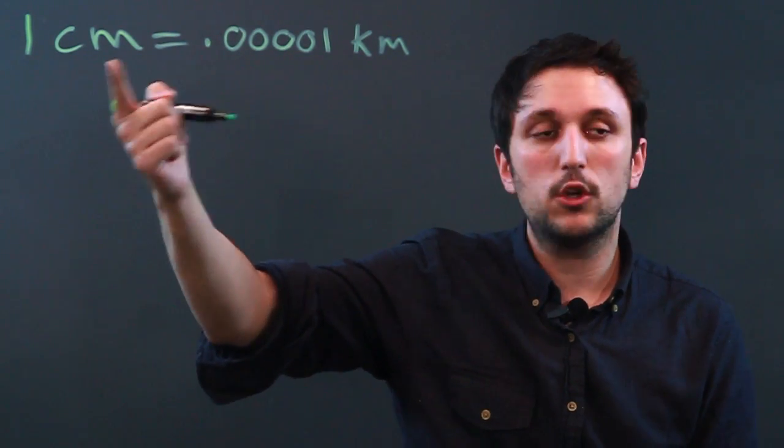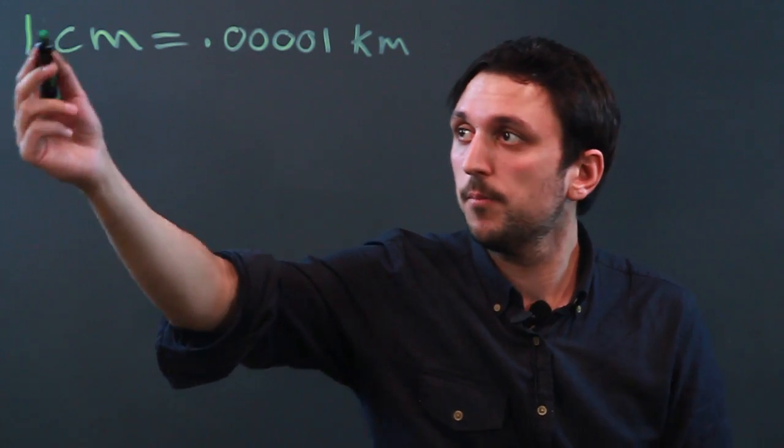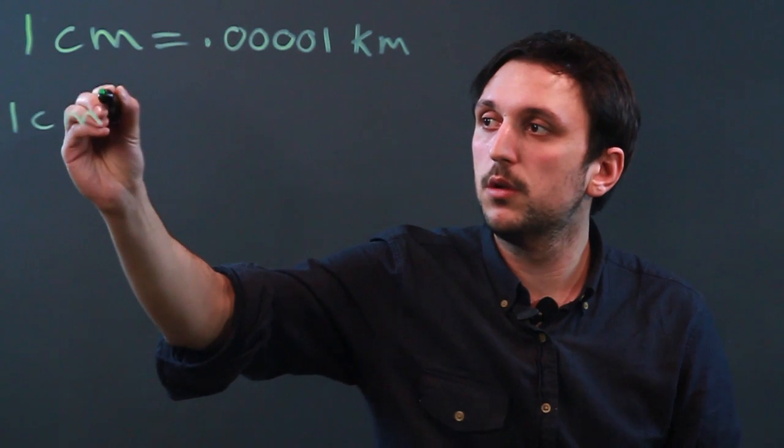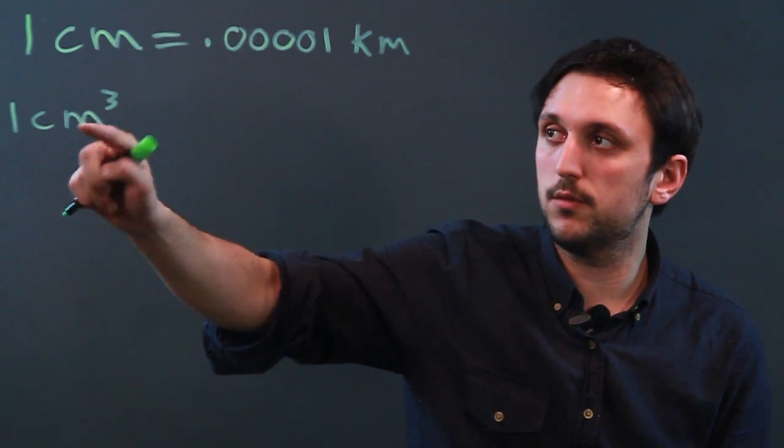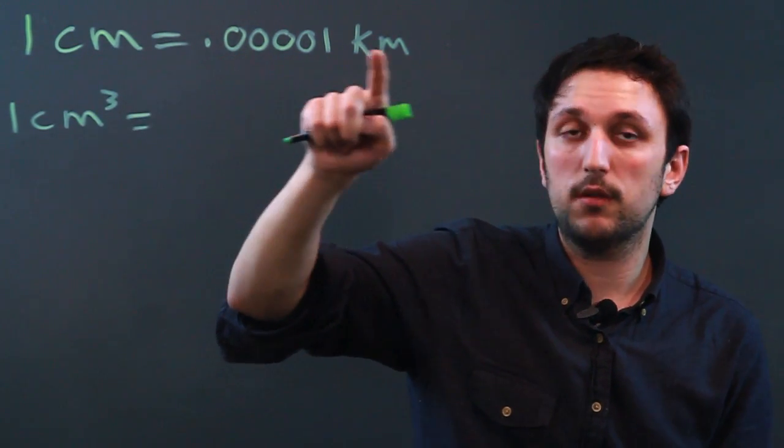So when we cube one, we have to cube the other, and we say one cm cubed, which is one cm times one cm times one cm equals this cube.